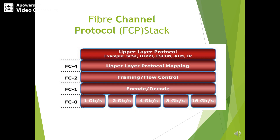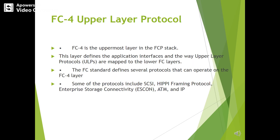In the FCP stack we have four layers: FC0, FC1, FC2, and FC4. FC0 indicates the physical interface; FC1 is the encode and decode part; FC2 performs framing and flow control; and FC4 consists of upper layer protocol mapping. Some upper layer protocols include SCSI, HIPPI, ESCON, ATM, and IP. FC4 is the uppermost layer in the FCP stack.